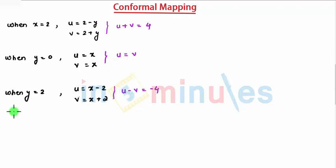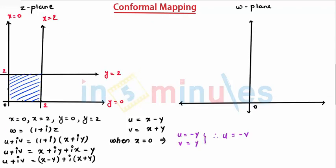I have u equal to v and another u equal to minus v. When you plot it here, u equal to v is a line that passes through the origin with angle 45 degrees.